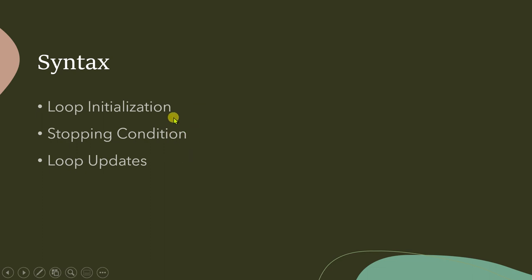For completeness, let me introduce all three points here. Loop initialization has to be done before the first execution of the loop body — the initialization statement of a loop is always executed once. The stopping condition is a condition that controls the loop's execution.